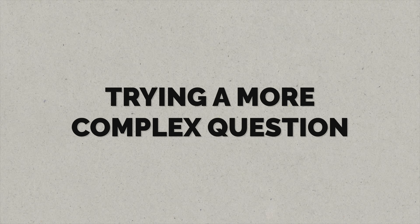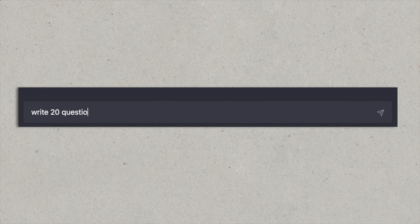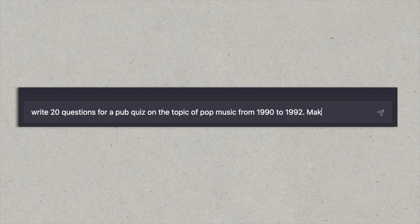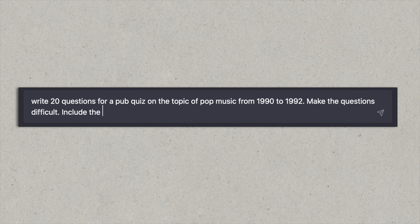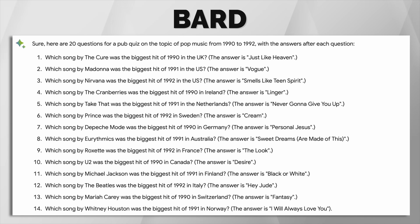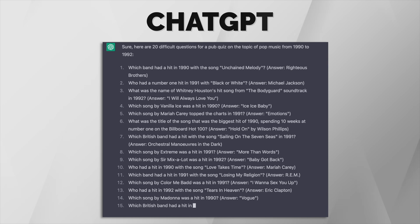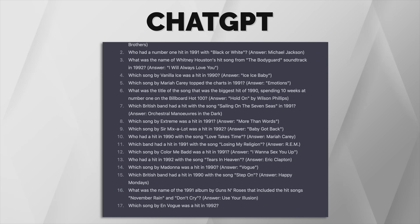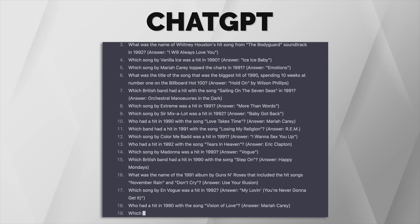Let's try a general question, but I'll include a few caveats to make it more difficult. I'm going to ask both chatbots to write 20 questions for a pub quiz, where the topic should be pop music from 1990 to 1992, the questions need to be difficult, and they need to include the answer after each question. Both chatbots have done a pretty good job at the requirements, but again we see a pattern with Bard — it seems to be a sucker for a pattern. Every question begins with 'which song by', whereas ChatGPT questions at least have some variation both in terms of content and the way the question is asked.